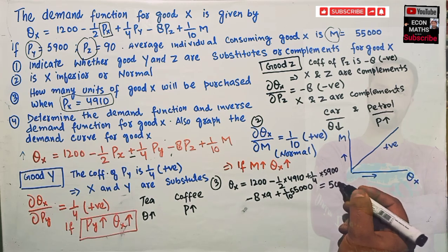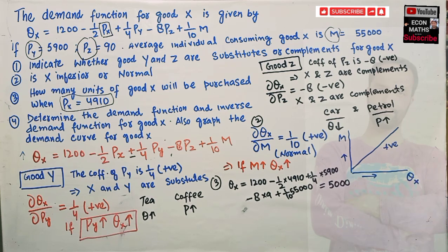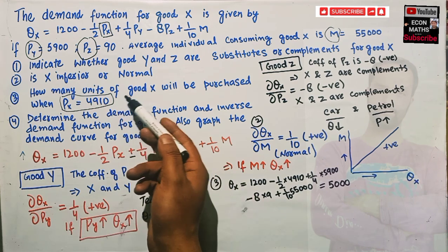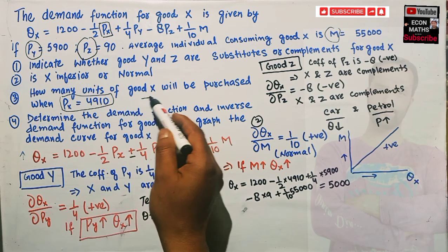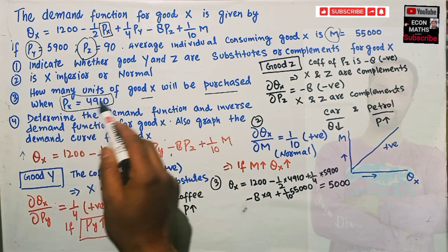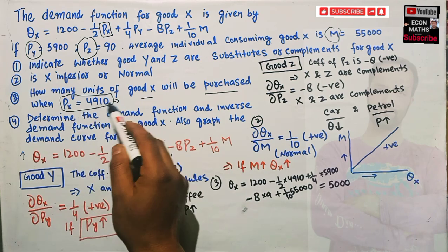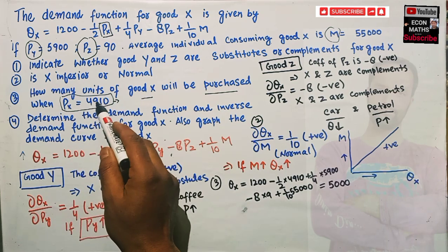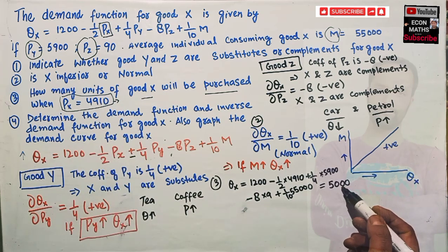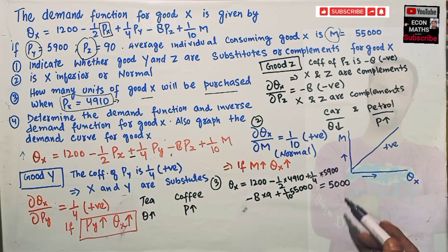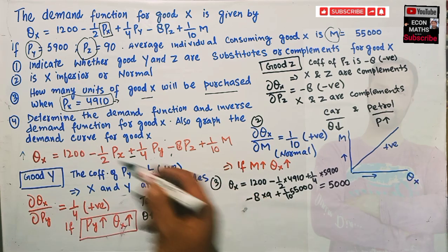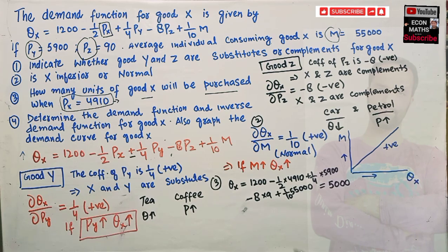That means when the price of X is $4,910, the units of good X that will be purchased equals 5,000 units. This was part 3.